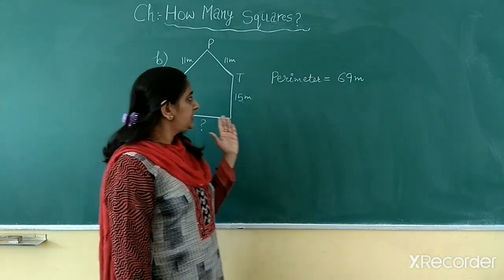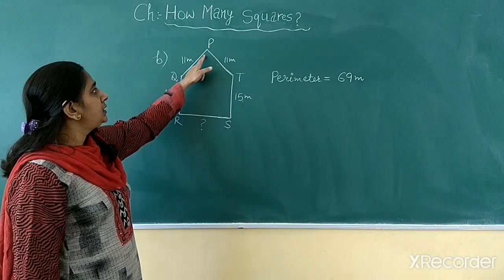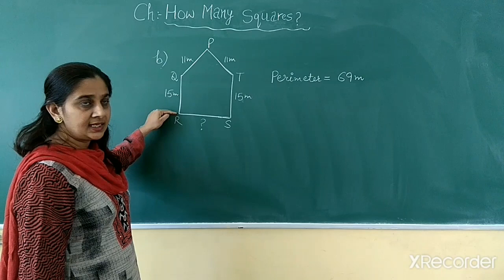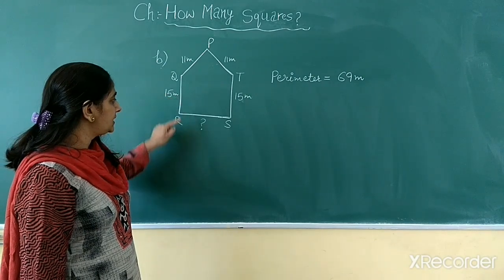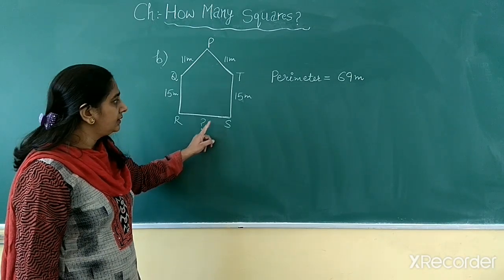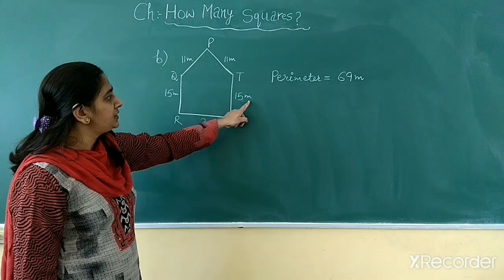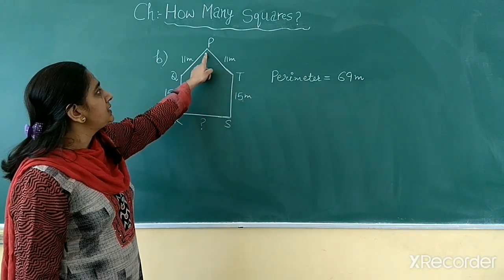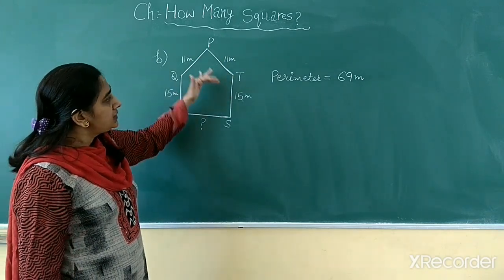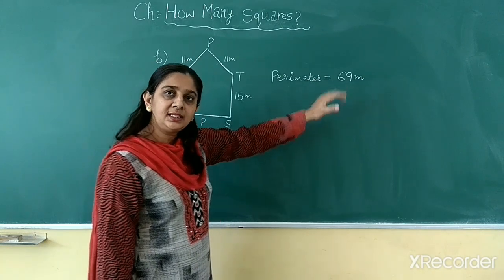Now in part B, this figure is given to us. This figure has 5 sides — it is a pentagon. PQ is its first side and its length is 11 meter. QR is its second side and its length is 15 meter. RS is the third side of this pentagon and this length is missing. SP is the fourth side and its length is 15 meter, and PQ — the fifth side — is 11 meter. The perimeter of this pentagon is given to us: it is 69 meter.